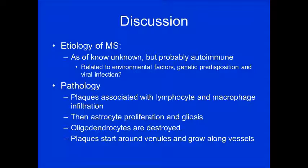The etiology of MS is currently unknown, but most believe it's probably autoimmune, possibly related to environmental factors, genetic predisposition, or a viral infection. Pathologically, plaques are associated with lymphocyte and macrophage infiltration, followed by astrocyte proliferation and gliosis. The oligodendrocytes are destroyed, and plaques form around the venules and grow along the vessels.